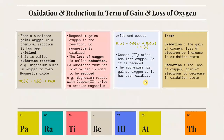Oxidation and reduction in terms of gain and loss of oxygen. When a substance gains oxygen in a chemical reaction, it means that it has been oxidized — this is called an oxidation reaction. For example, magnesium burns in oxygen to form magnesium oxide, meaning that magnesium gains oxygen in the reaction, so magnesium is oxidized.